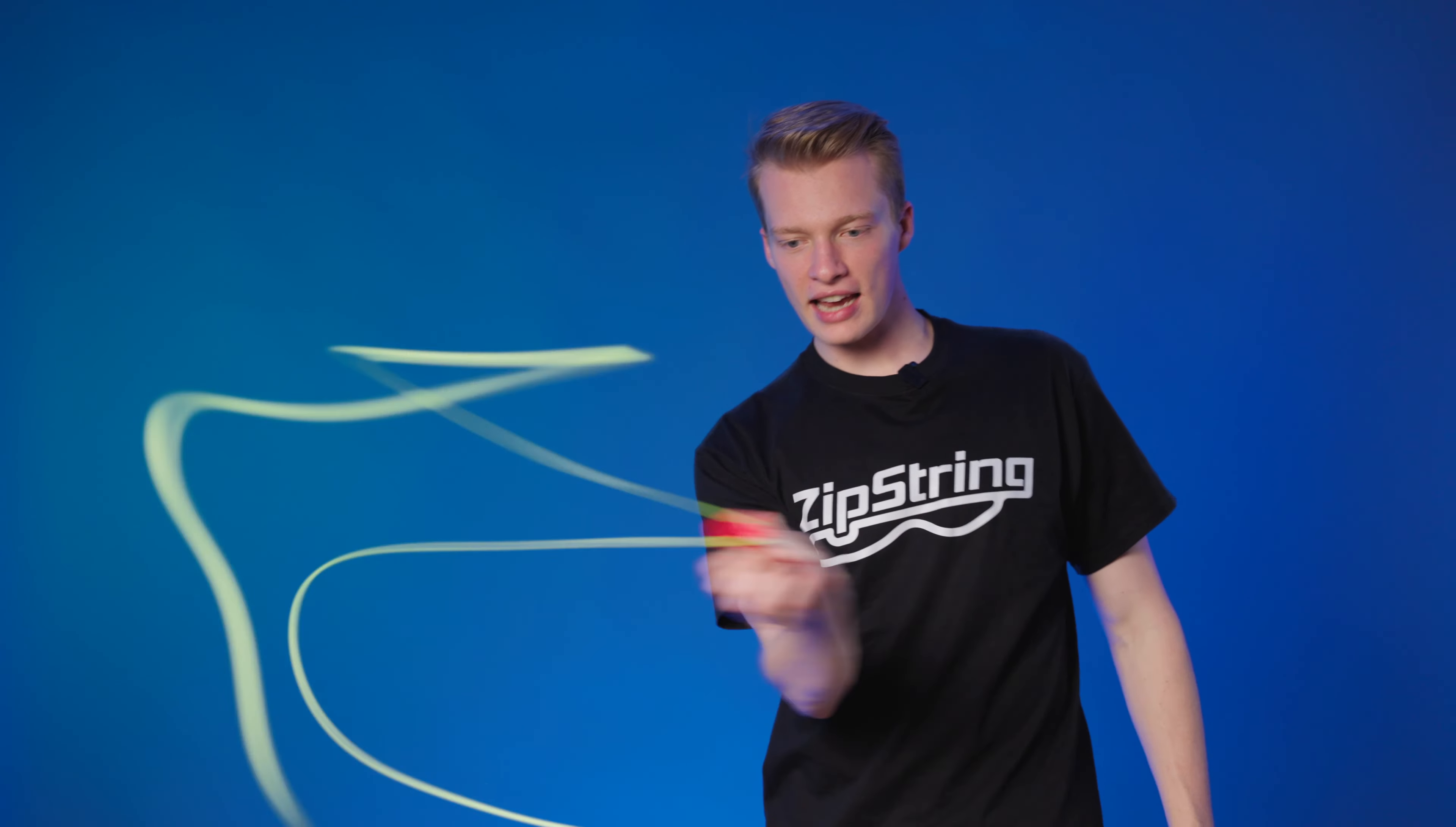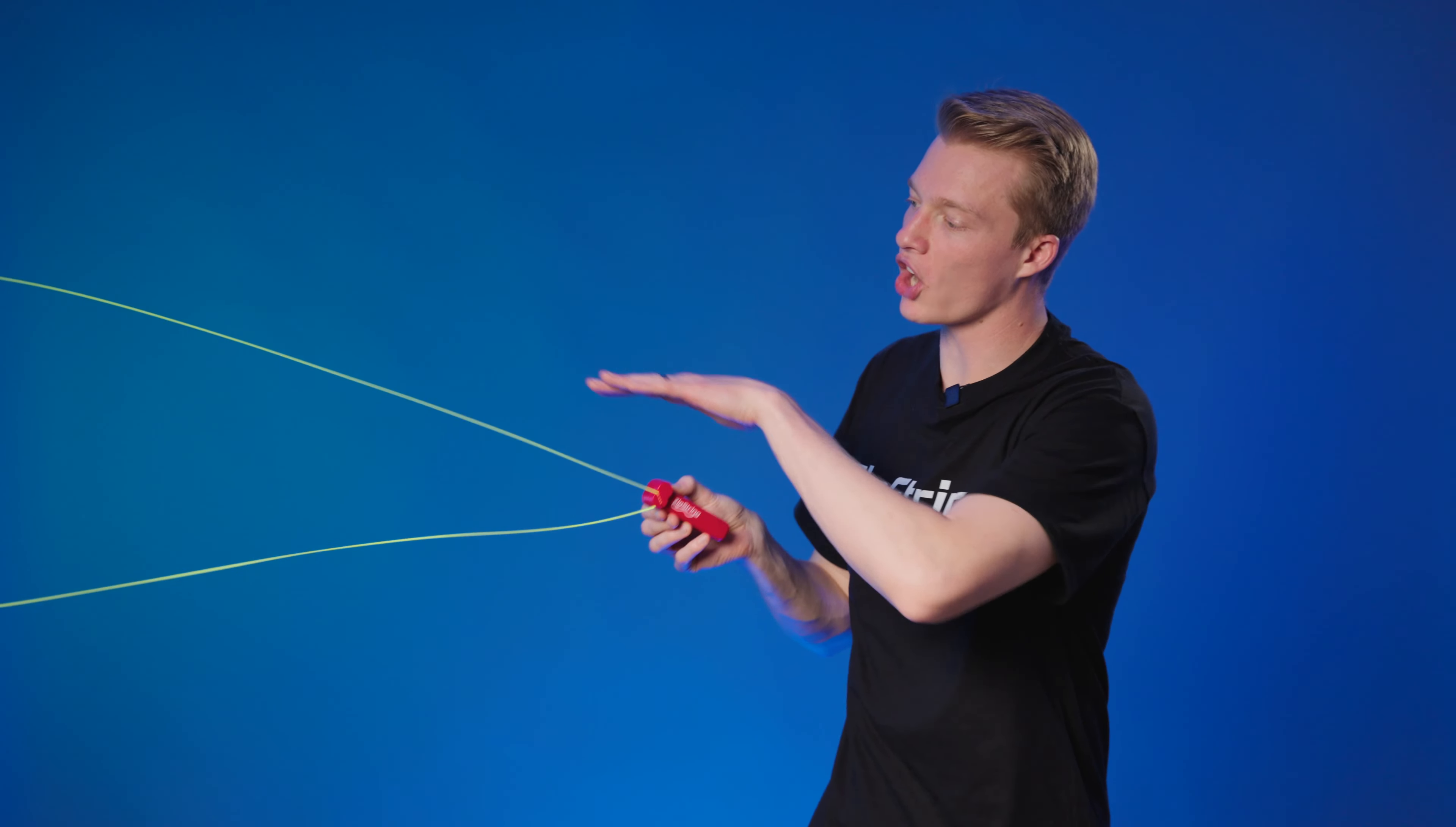You can move the zip string almost any way you'd like. Side to side is easy. Up and down is tricky. That's because the top string is traveling in a different direction than the bottom string. If they touch, you'll be sure to get a tangle.